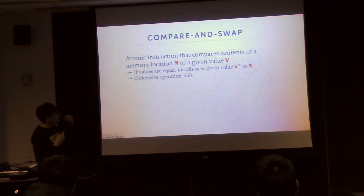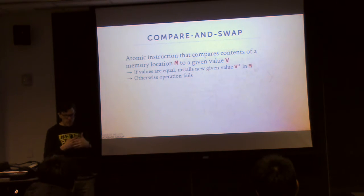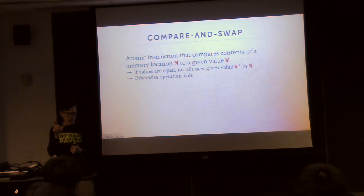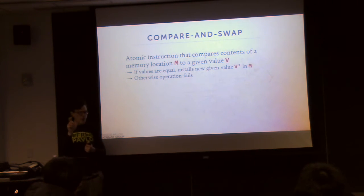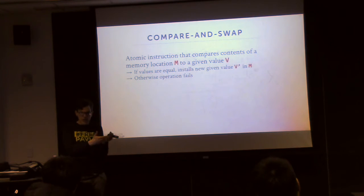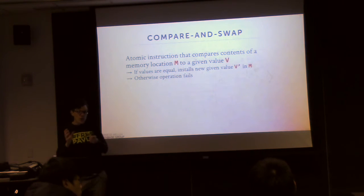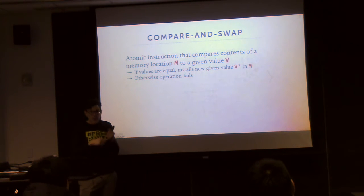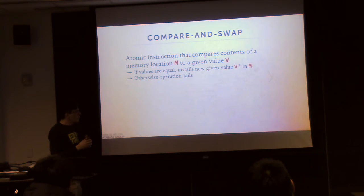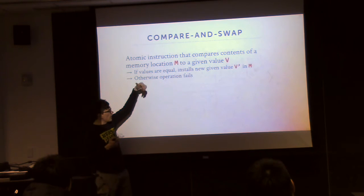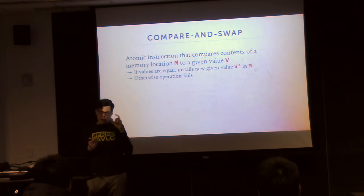Compare-and-swap is a special instruction that the CPU provides that allows you to examine the contents of a memory location and check to see whether its current value is equivalent to some value you're checking it for. And if so, you're allowed to go ahead and modify it with a new value. If not, it fails. So if we have memory location M, we want to check whether it has a current given value V, and if it does, we're allowed to install V-prime.